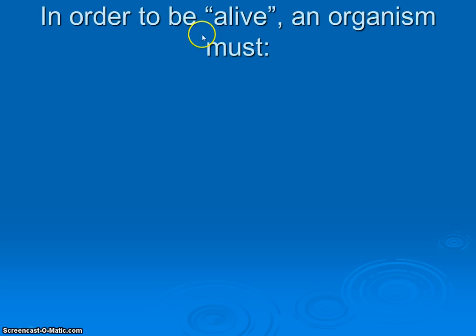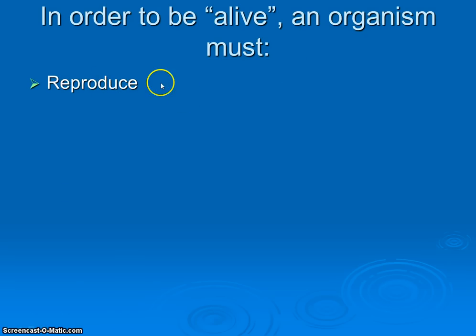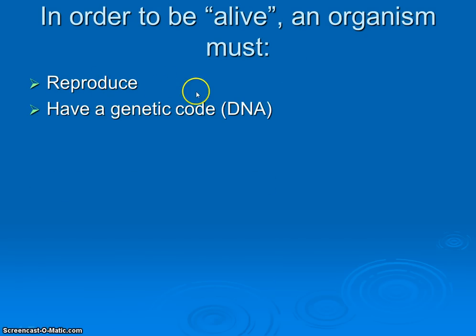What we're going to look at in this video — and then practice later in class — is: in order to be alive, there are essentially some rules. All living things have to reproduce. All living things have to have what is called the genetic code — we're going to be studying DNA. They must be made up of one or more cells.